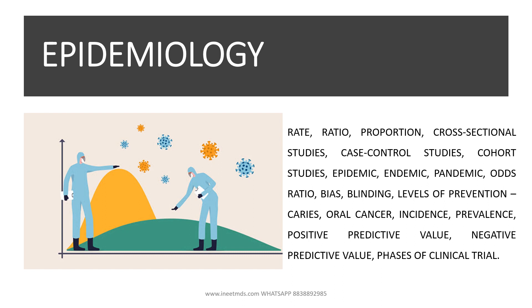What is an odds ratio, the different types of bias and blinding, and the levels of prevention. There are primary, secondary and tertiary levels of prevention.